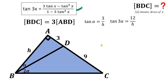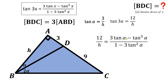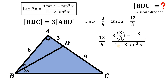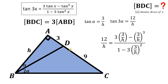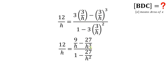Referring to this identity and our given alpha, tangent of 3 alpha equals 3 times tangent alpha minus tangent cubed alpha, all over 1 minus 3 times tangent squared alpha. Let's replace tangent of 3 alpha with 12 over h, and replace tangent alpha with 3 over h. So we get 12 over h equals 9 over h minus 27 over h cubed, all over 1 minus 27 over h squared. Let's simplify this expression.